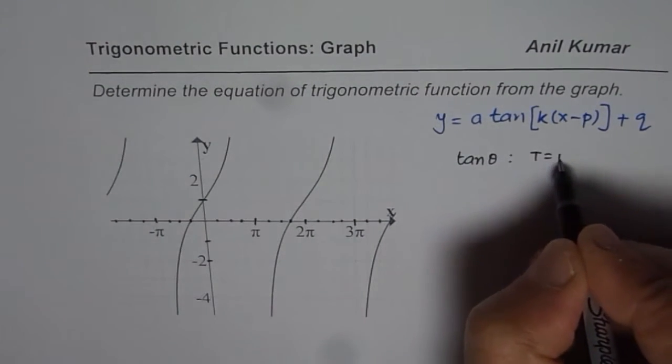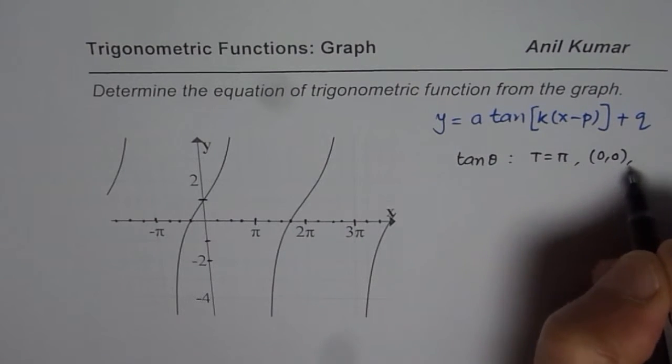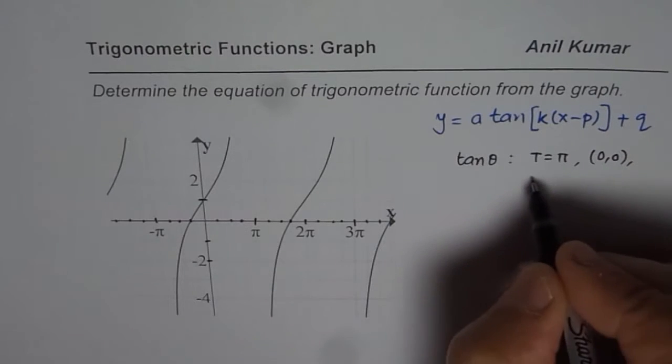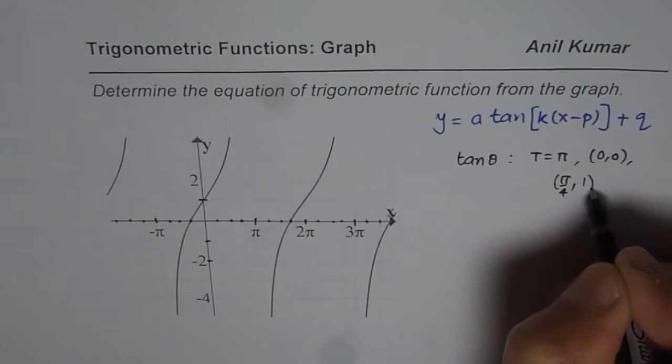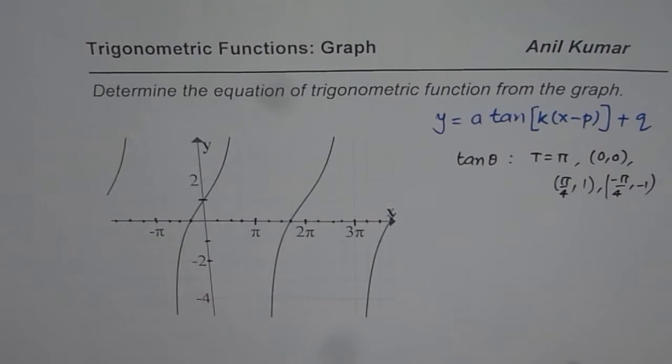And some critical points are 0, 0. And at pi by 4, pi by 4, the value of tan is plus 1. And at minus pi by 4, the value of tan theta is minus 1.